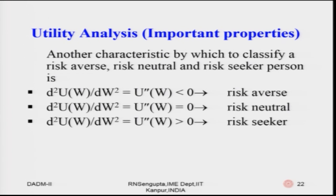Another characteristic to classify risk aversion, risk neutrality, and risk seeking is the second derivative. If the second derivative U''(W) < 0, the utility function is increasing but at a decreasing rate — risk averse. If U''(W) = 0, the utility function is increasing at a constant rate — risk neutral. If U''(W) > 0, the utility function is increasing at an increasing rate — risk seeking.